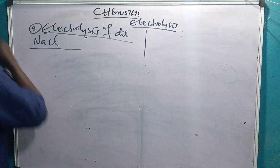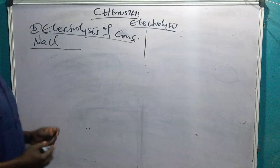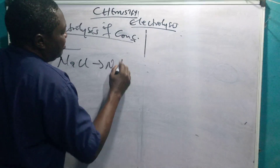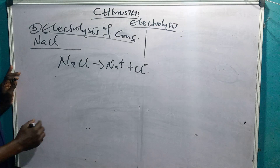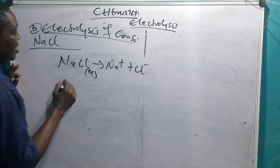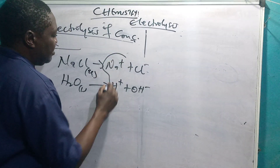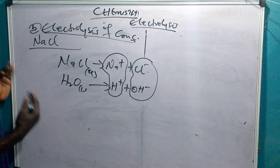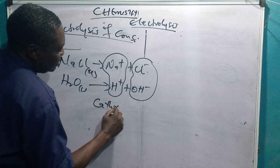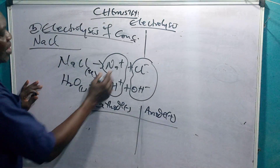Now let's go to electrolysis of concentrated sodium chloride solution. The same ionization process happens: NaCl gives Na⁺ and Cl⁻, and water gives H⁺ and OH⁻. Whether concentrated or dilute, both are dissolved in aqueous solution. You still have a cathode which is negative and an anode which is positive, and the same general principles apply.